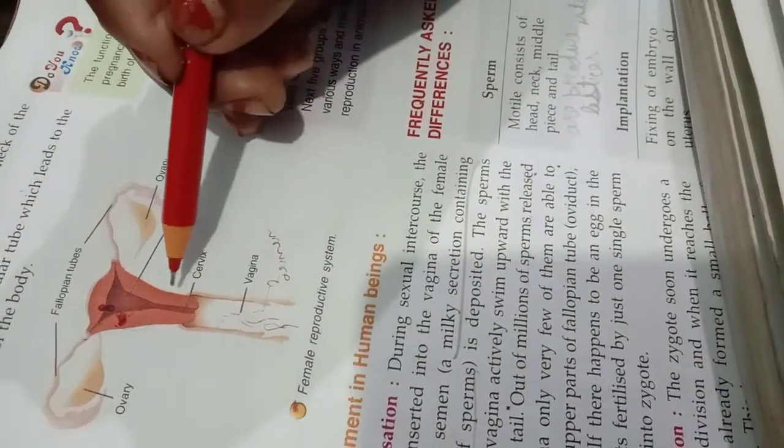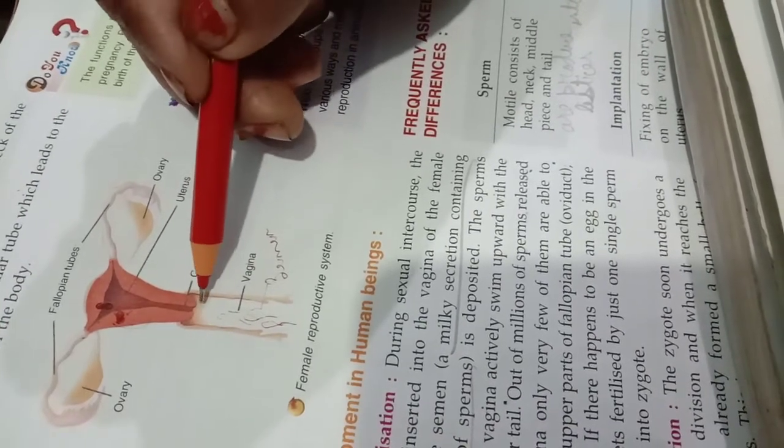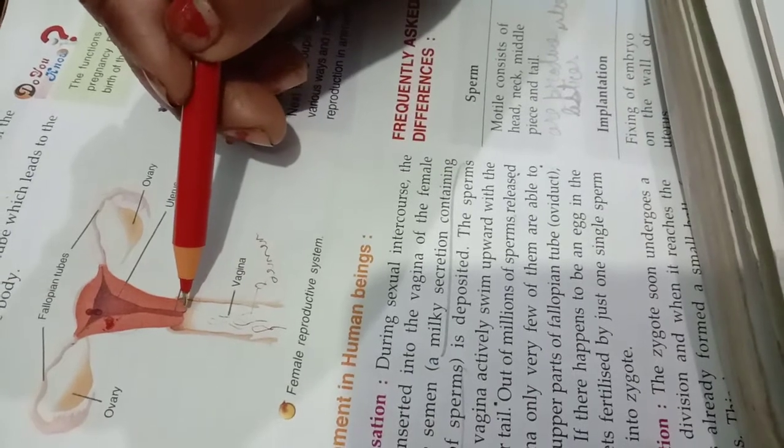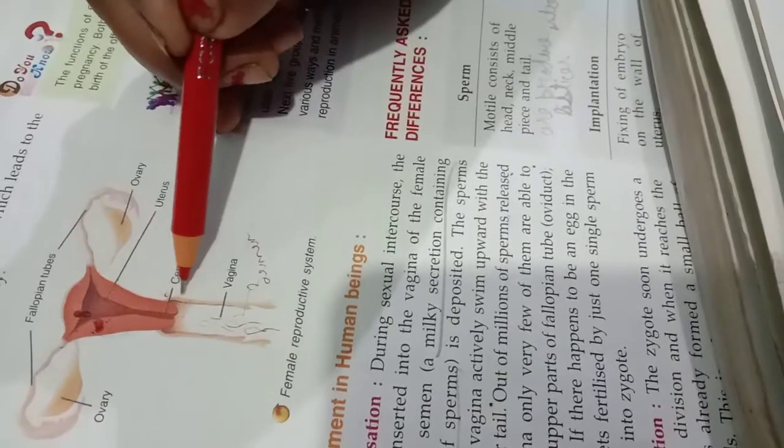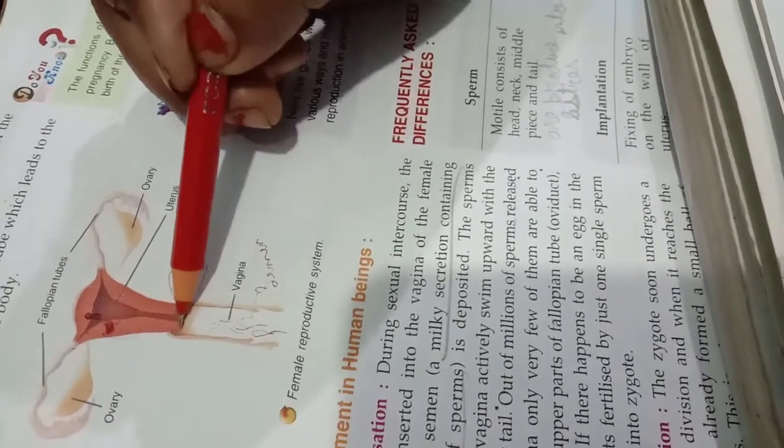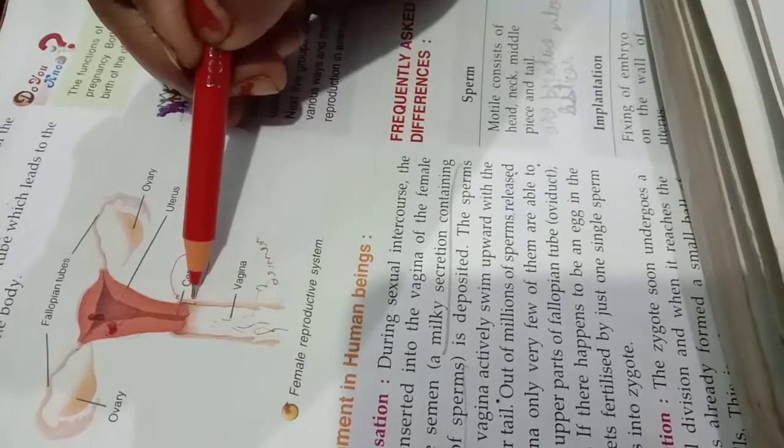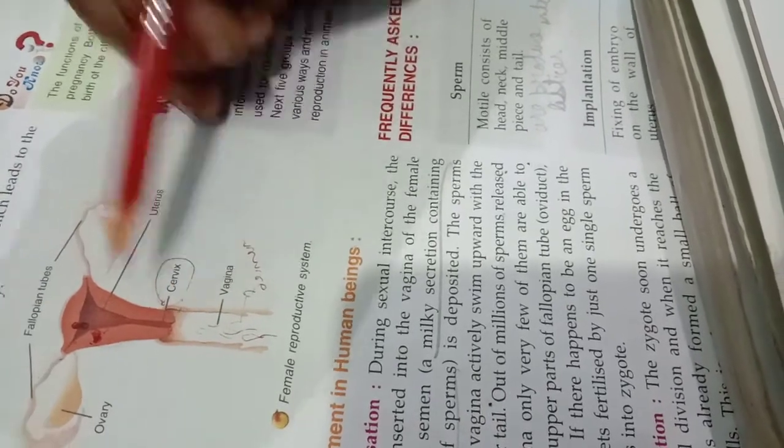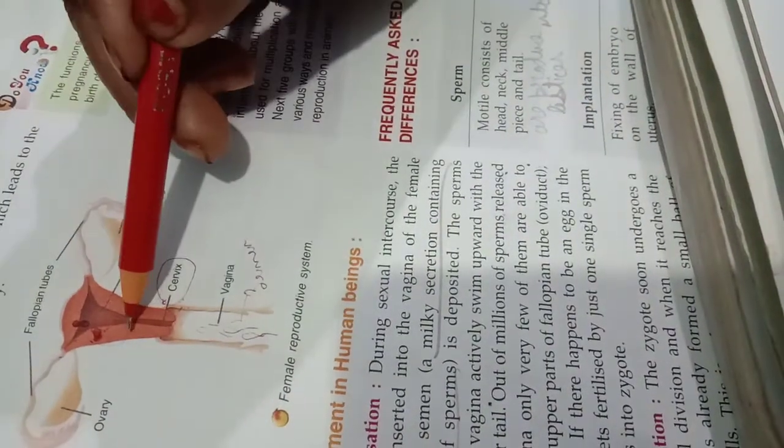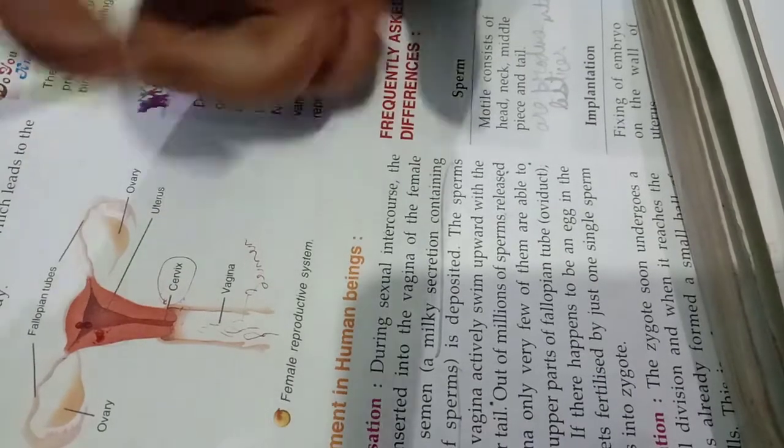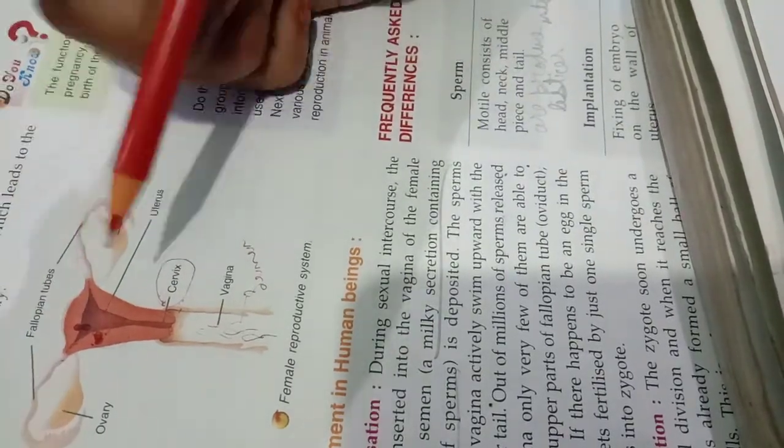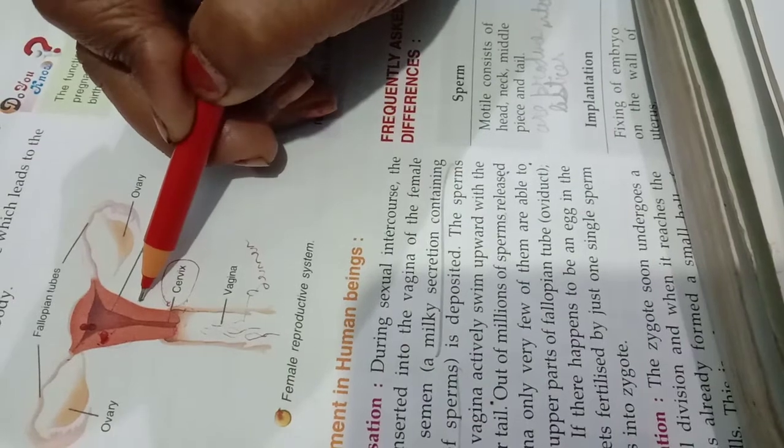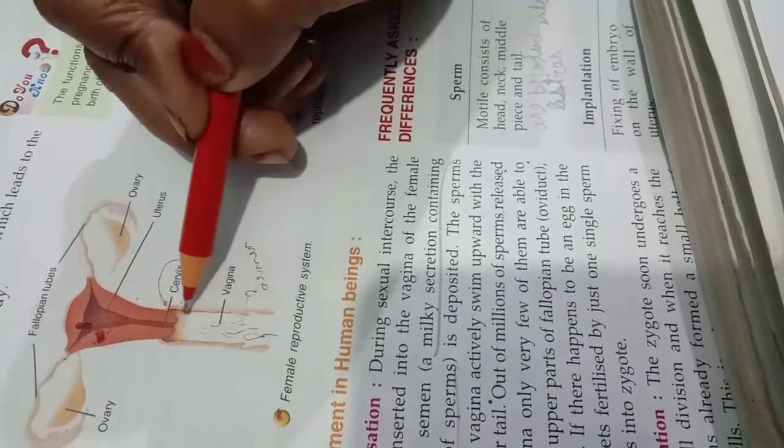Now what happens? It forms the parturition. The next stage is after 9 months or 280 days, the next stage comes which is called as parturition or childbirth. So what happens? During this stage, this cervix or the opening of the uterus, it expands, widens.